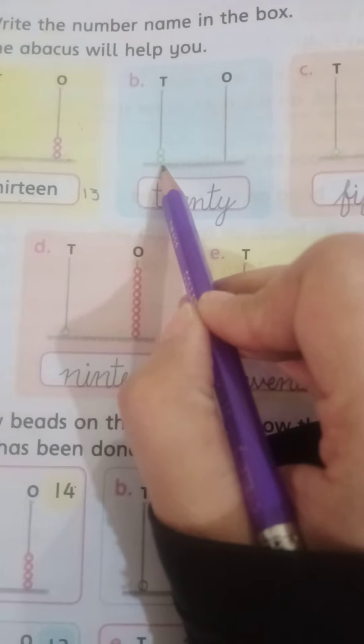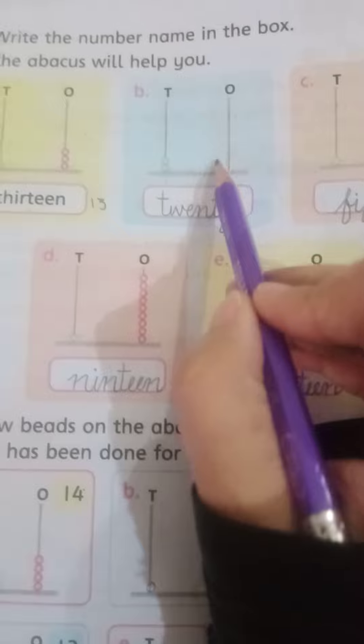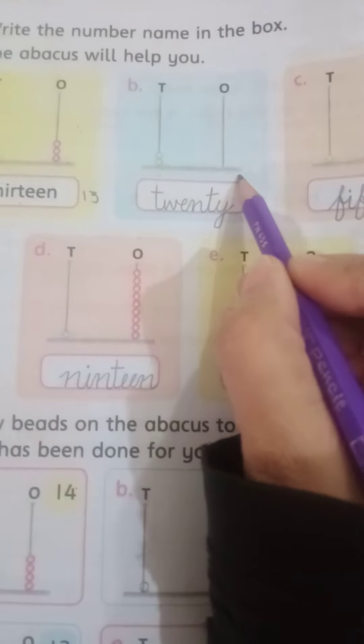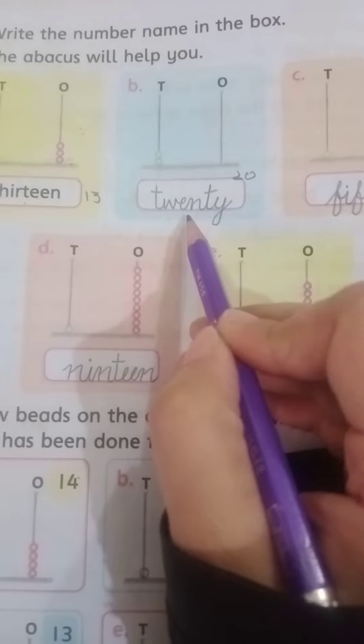Jaise ke yahan pe tens mein sirf two circles banaye hue hain, or ones mein koi bhi circle nahi hai. Iska matlab yahan pe zero hai, toh two, zero, twenty. Toh kya aapka answer aayega inverse mein? Aapne kya likhna hai: twenty.